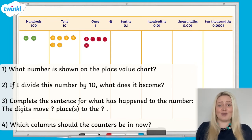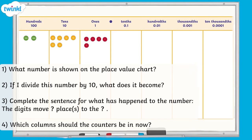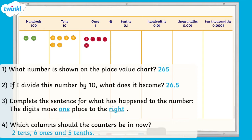Time to check your answers. For question 1, the answer was 265. For question 2, the answer was 26.5. For question 3, the digits move one place to the right. For question 4, you should have shown 2 counters in the tens column, 6 counters in the ones column, and 5 counters in the tenths column.